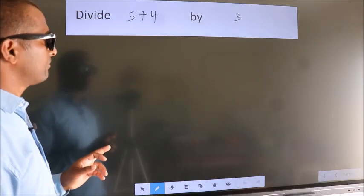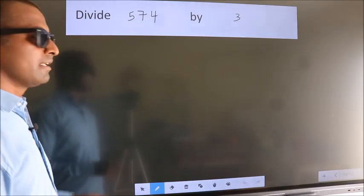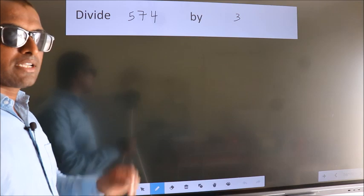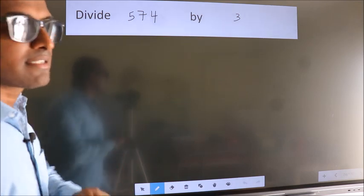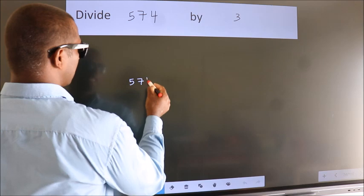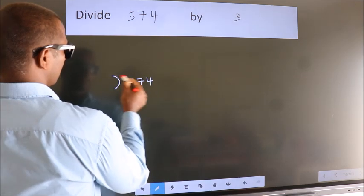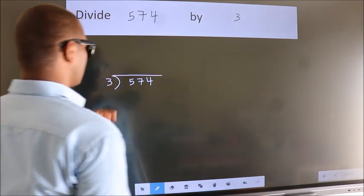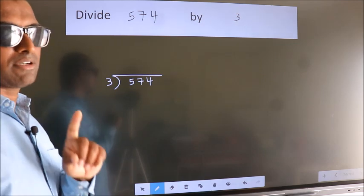Divide 574 by 3. To do this division, we should frame it in this way. 574 here, 3 here. This is your step 1.